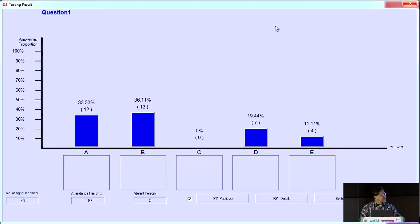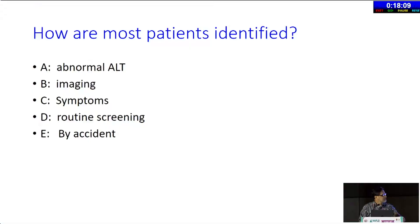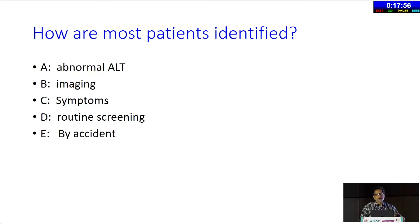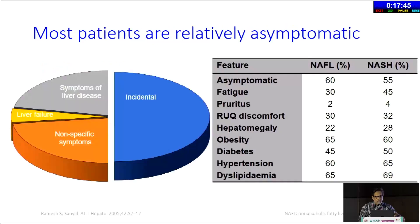The truth is that the majority of patients are identified by accident — when imaging is done for other reasons, not because you're looking for fatty liver disease. The point of this question is to raise awareness that we have to be aware of these other comorbidities, because if you have one, the likelihood that you have fatty liver disease is much higher. So you have to look for it.